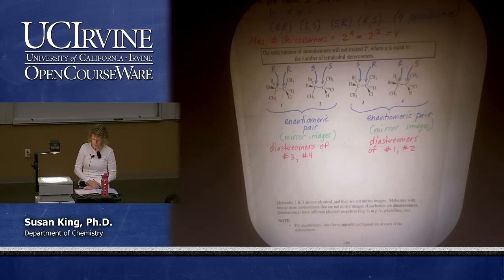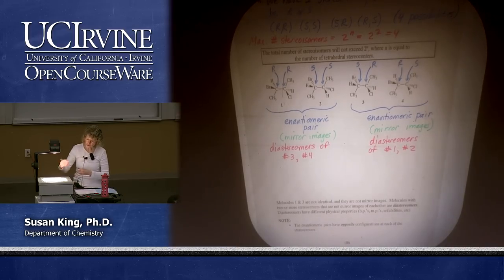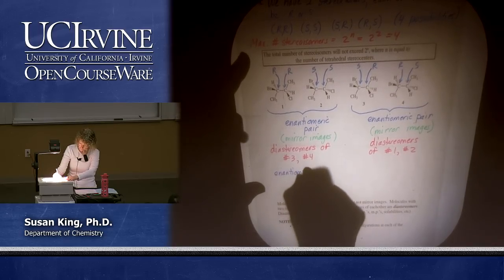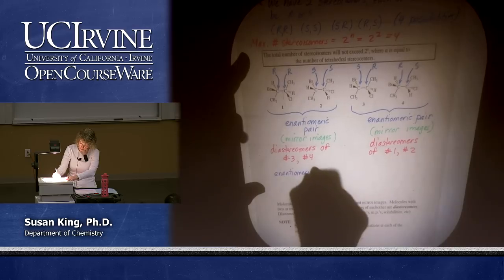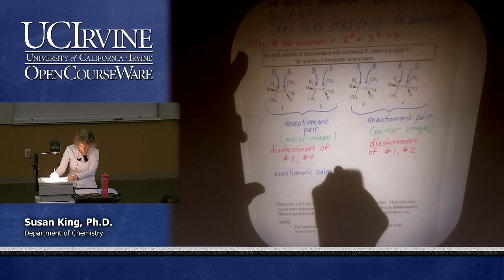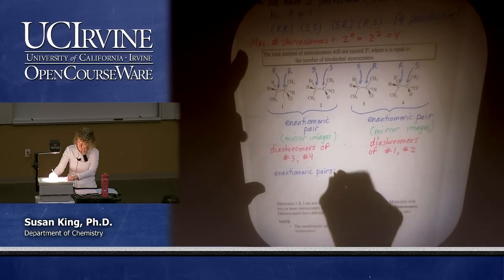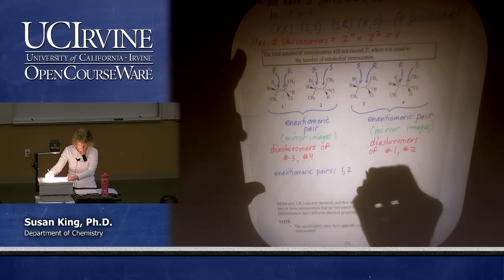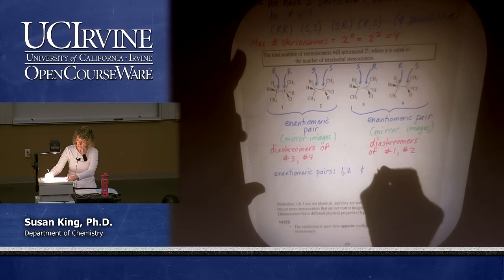We can list our enantiomeric pairs and our diastereomeric pairs — you need to know how to do this on an exam. Enantiomeric pairs: 1 and 2, and the second enantiomeric pair: 3 and 4.